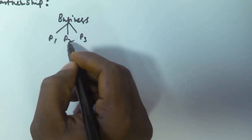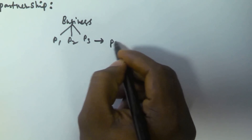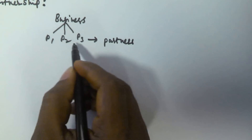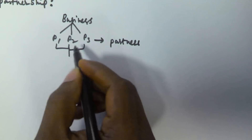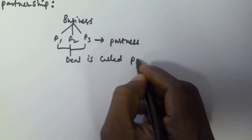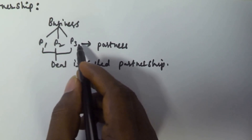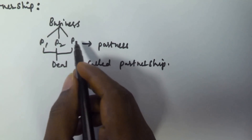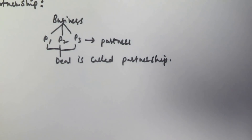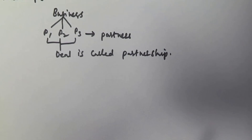These three persons are called partners, and the deal between them is called a partnership. So if two or more persons are running a business, those persons are called partners and the deal between them is called a partnership. Whenever there is a business, there is obviously going to be an investment.